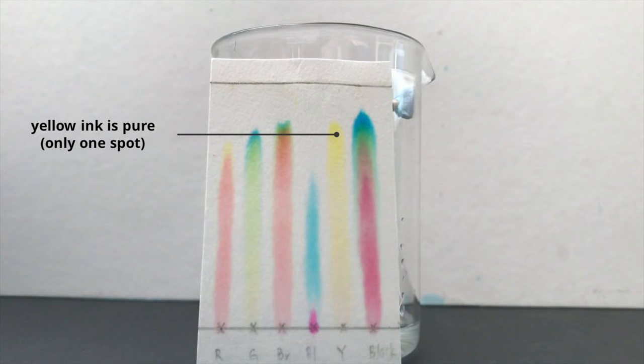Let us take a look at the results. We find that many of the inks are made up of a mixture of dyes except for the yellow one because there is only one spot. We can say that the yellow ink is pure because it is only made up of one dye.